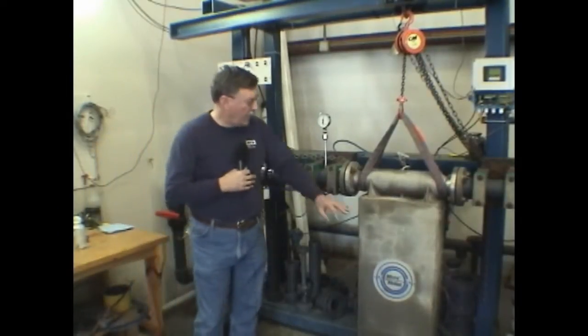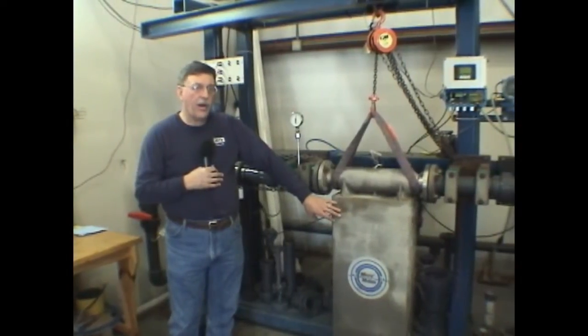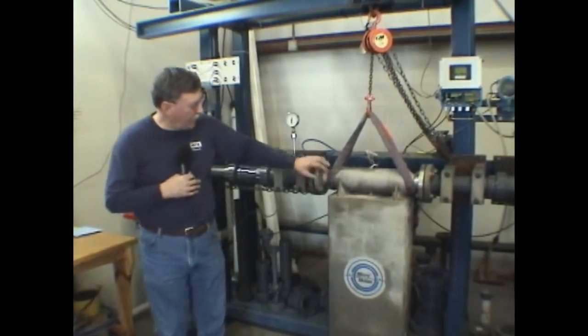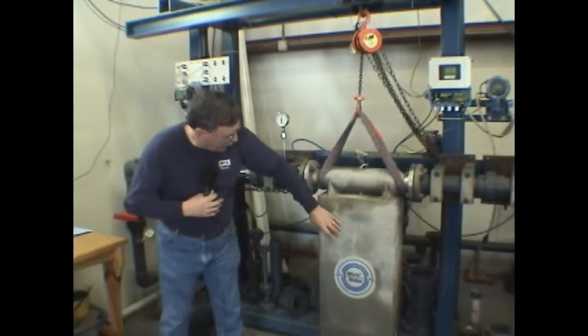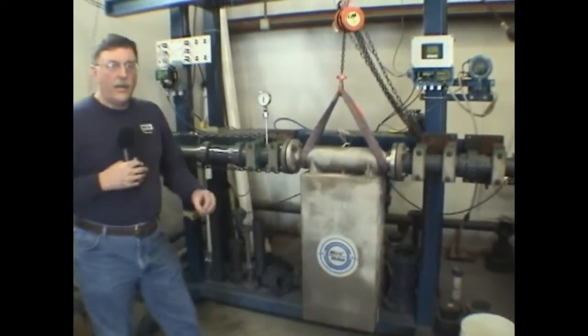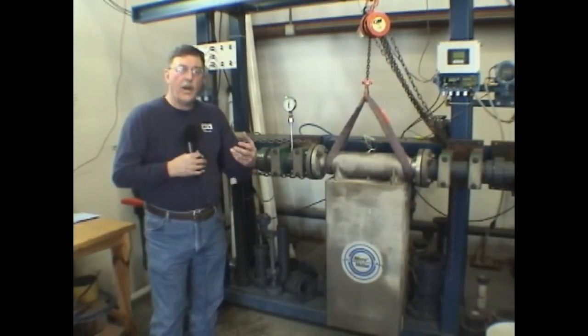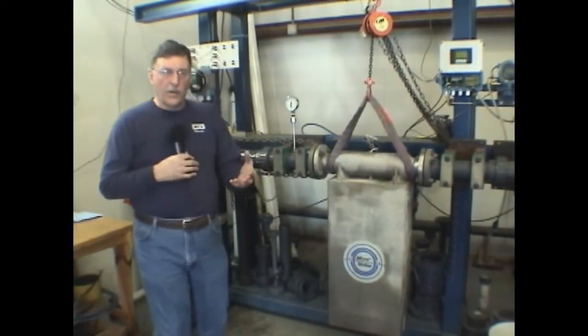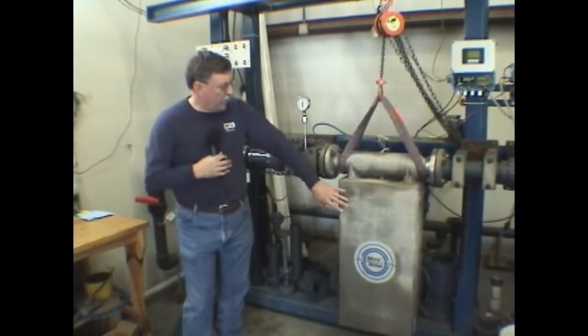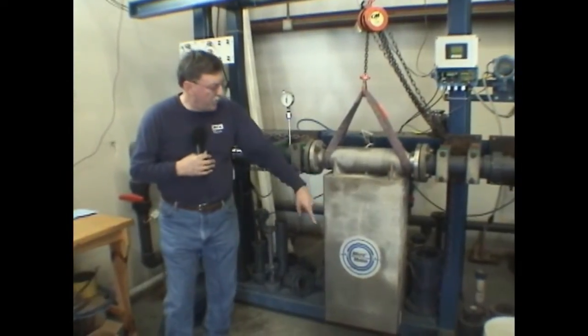Some meters, the Coriolis in particular, some of the designs have an elongated tube. In this case, the flow is diverted into two tubes that take a U shape. Now, the positioning of the tube is important here relative to the properties of our process. If we're going to be measuring a liquid process, we always want to install this type of flow meter so that the tubes are down. Therefore, gravity will keep the tubes full of liquid.